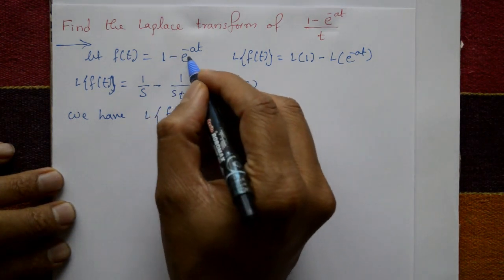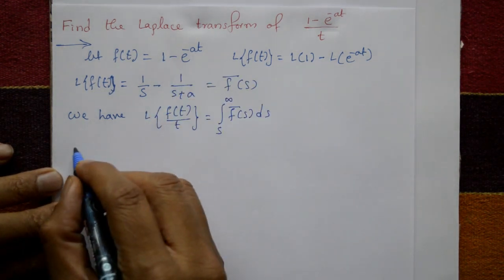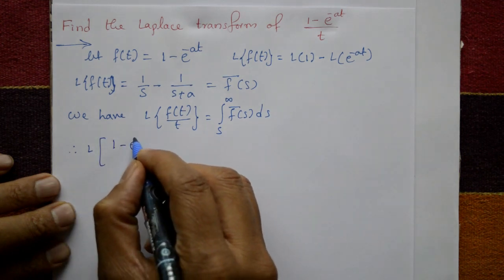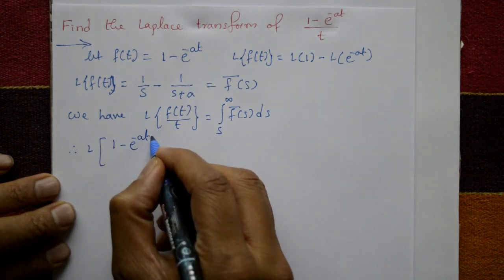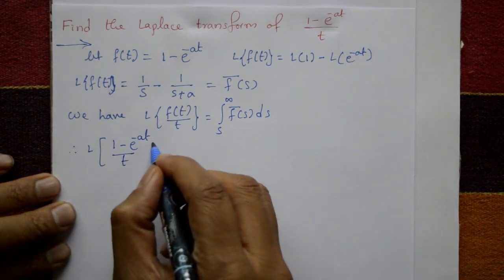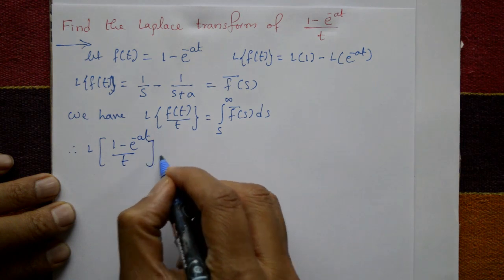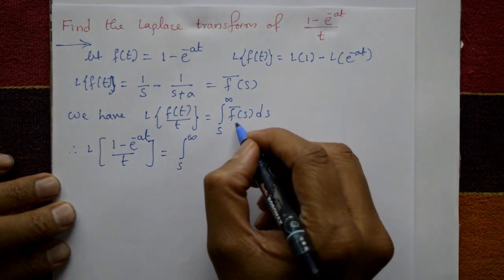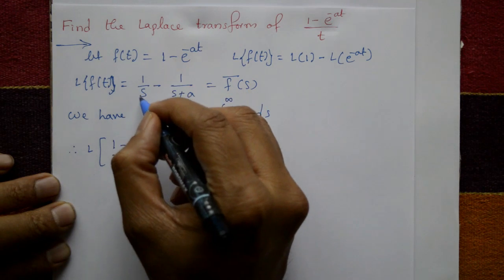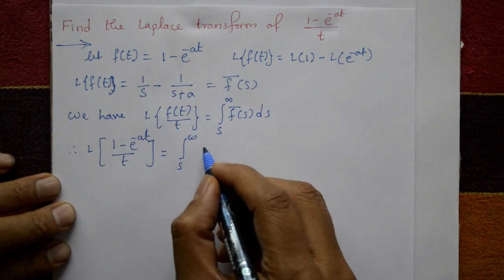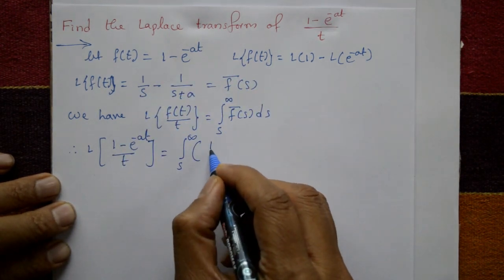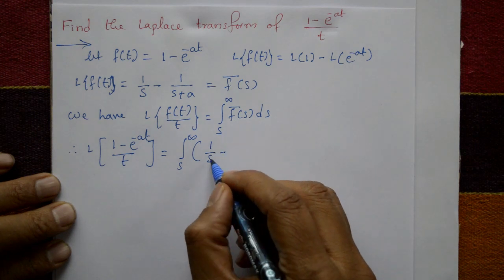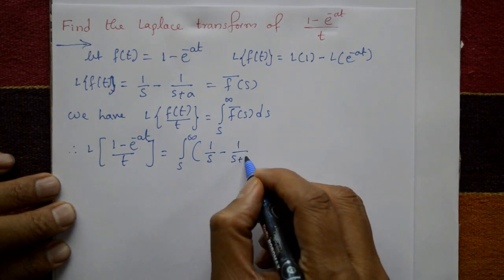Since f(t) is 1 minus e raised to minus at, therefore Laplace of (1 minus e raised to minus at) divided by t equals integration from s to infinity of f bar of s, which is 1 upon s minus 1 upon s plus a, with respect to s.